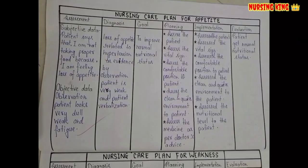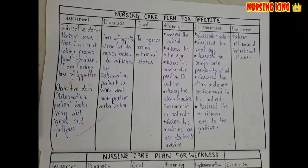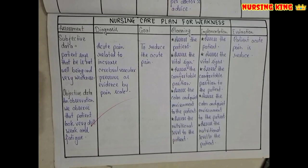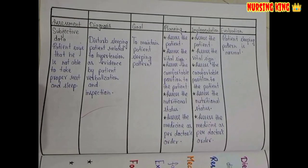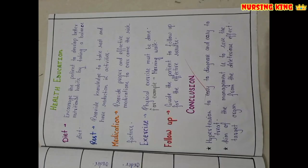After that, you have to write the nursing care plan. Write five nursing diagnoses, and for each one include all six components: goal, nursing diagnosis, assessment, planning, implementation, and evaluation.